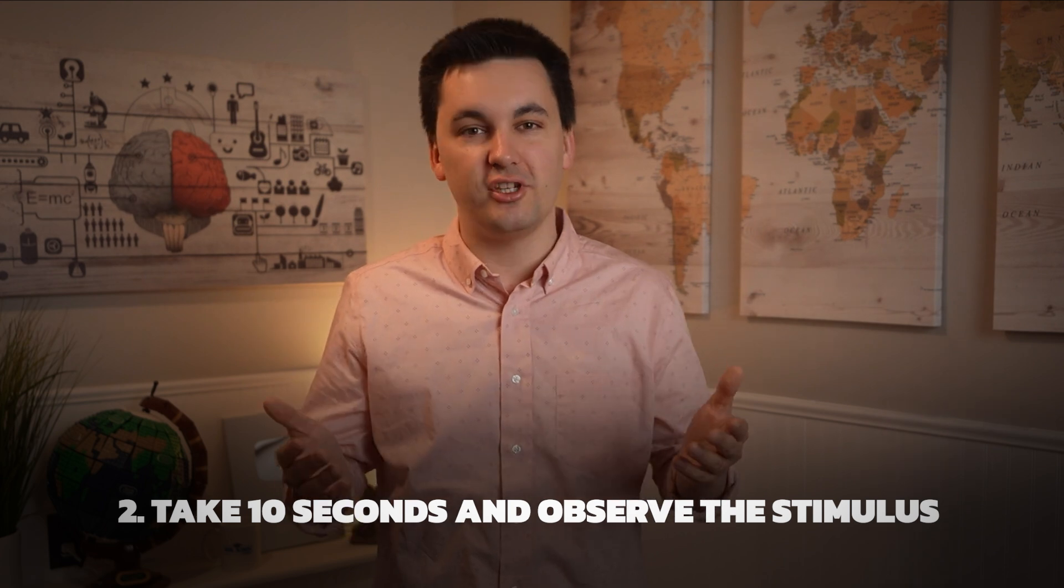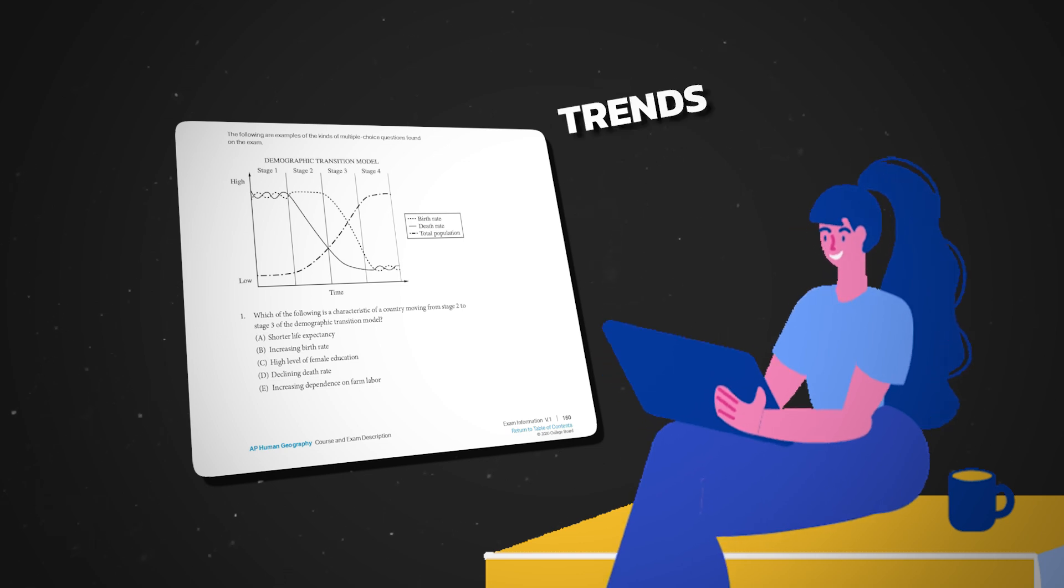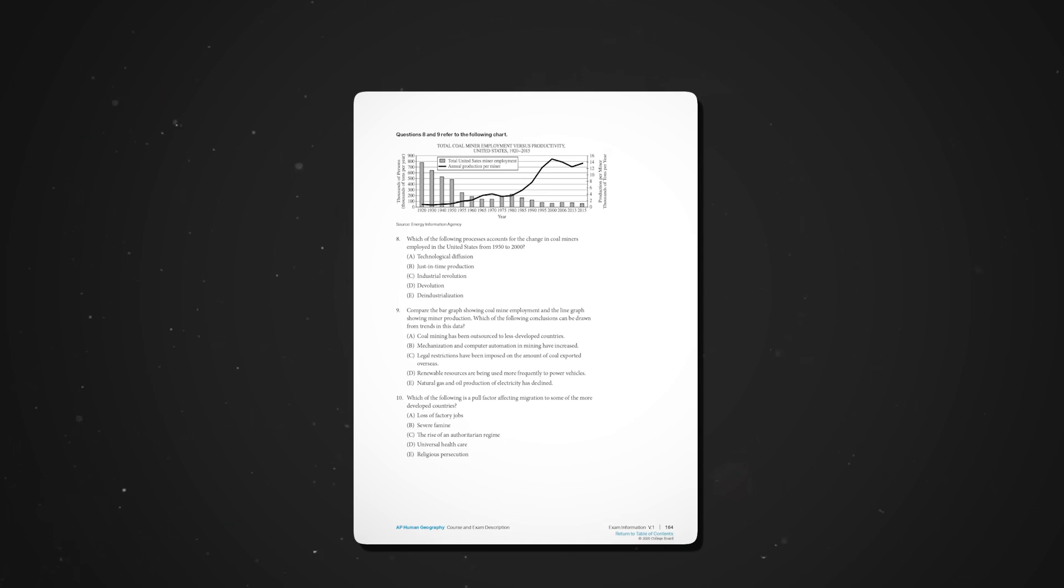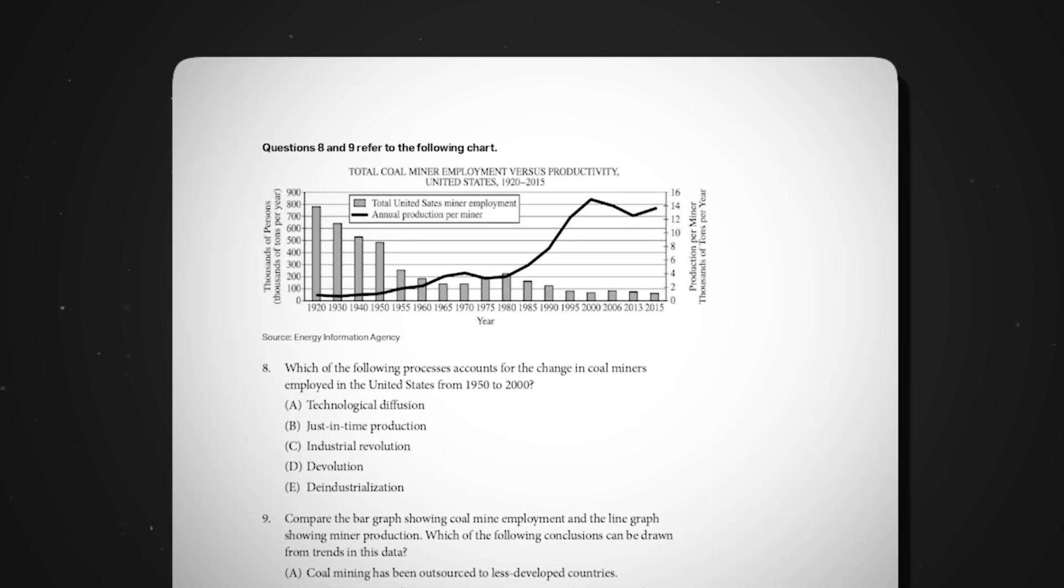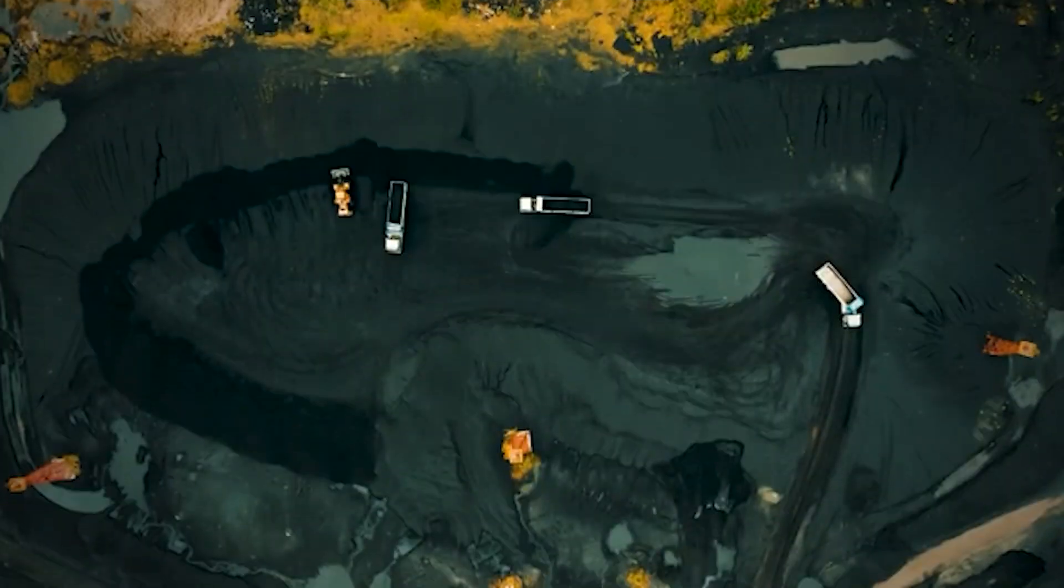Now that we've done that, we need to go on to step number two, which is to take 10 seconds and observe the stimulus. This is key. Before you get to the question, just look at the stimulus. When looking at it, see if you can identify any trends, patterns, and themes that are being presented to you. Going back to our example, I can see that coal miner employment in the United States has decreased from 1920 to 2015, while at the same time, production per miner has increased. Right away, I'm thinking about technological advancements. I notice that we have less people working in the sector, but people are more productive overall.